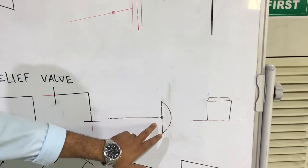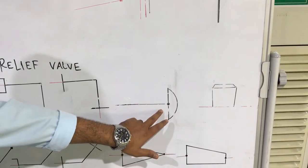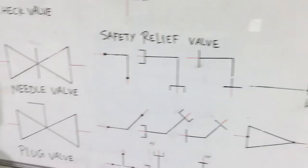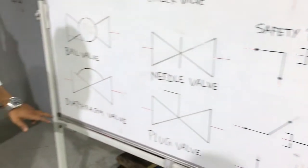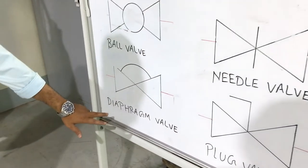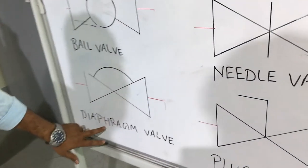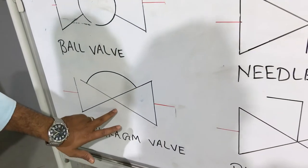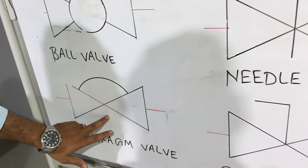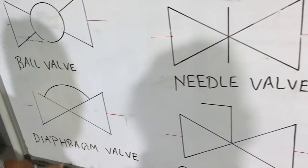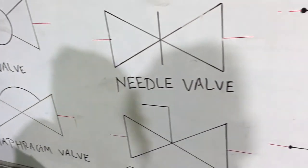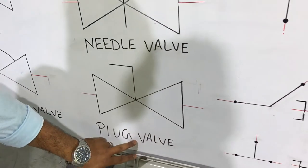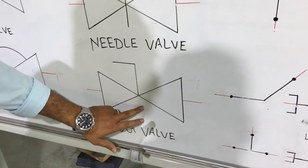Now here we have diaphragm valve — this symbol is for diaphragm valve. And this one is plug valve; this is the symbol of plug valve.